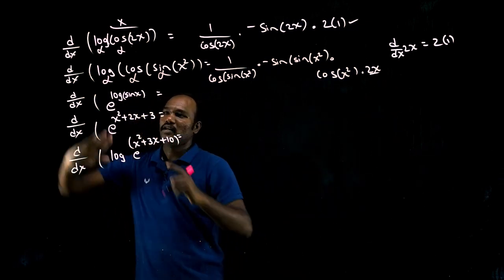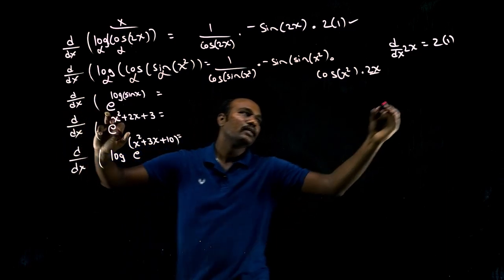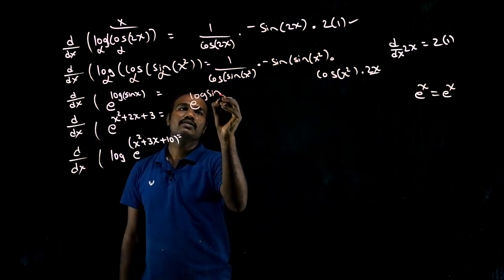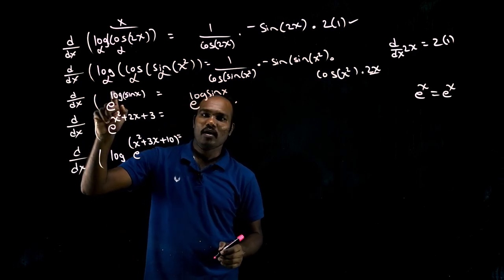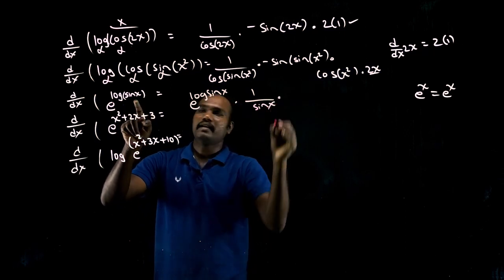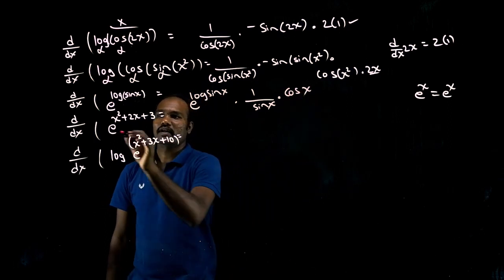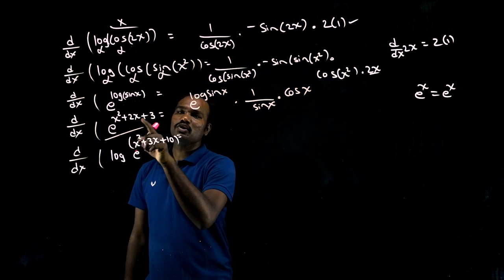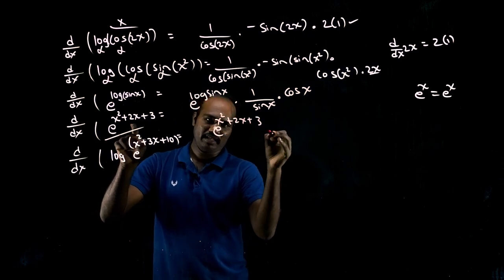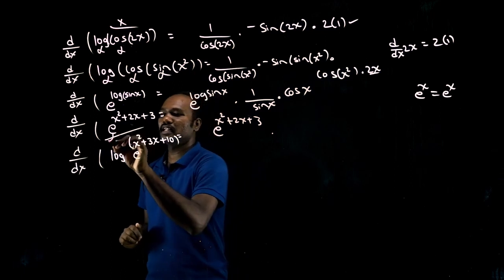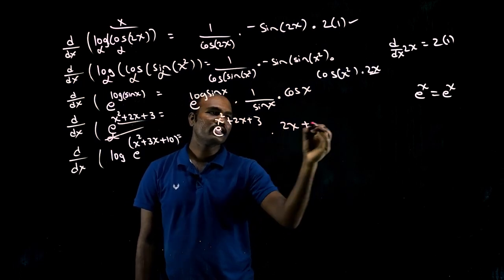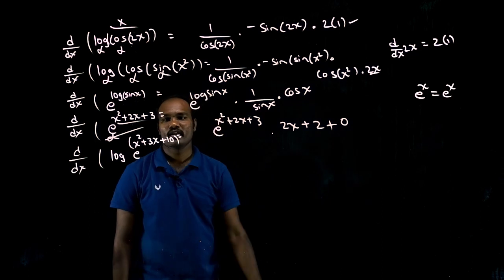Next question: e^(x² + 2x + 3). e^x differentiation is e^x. So this differentiation is e^(x² + 2x + 3) times. Then we have to differentiate the exponent. x² + 2x + 3 differentiation: x² differentiation is 2x. Plus 2x differentiation is 2. Plus constant differentiation is 0.